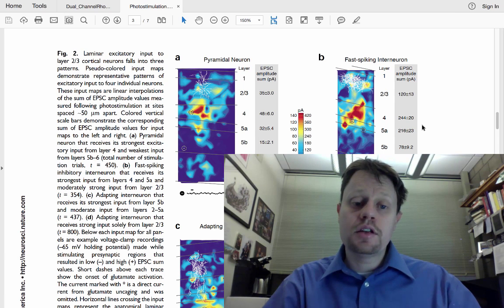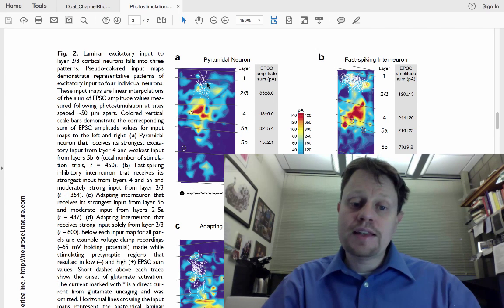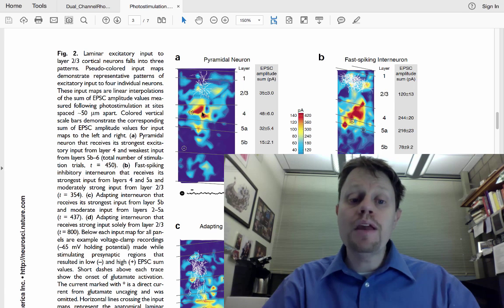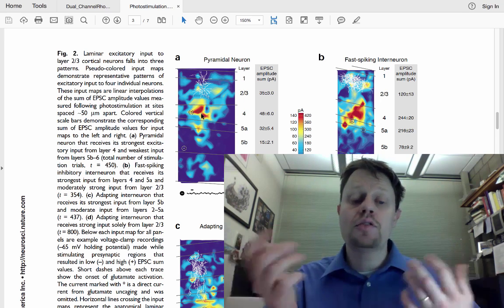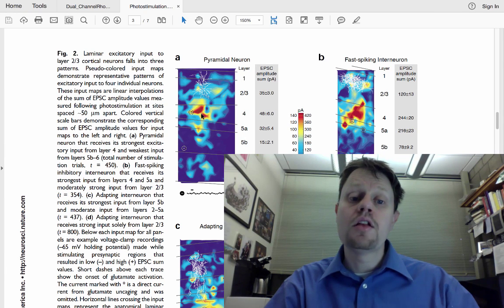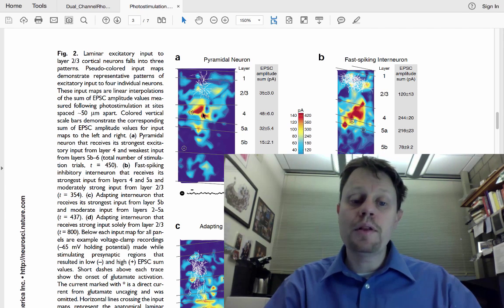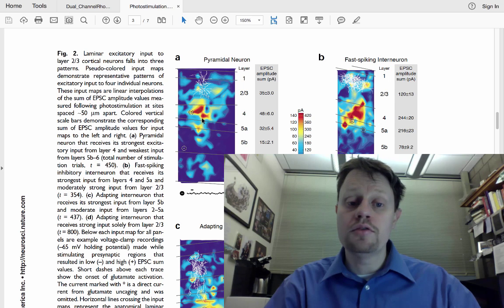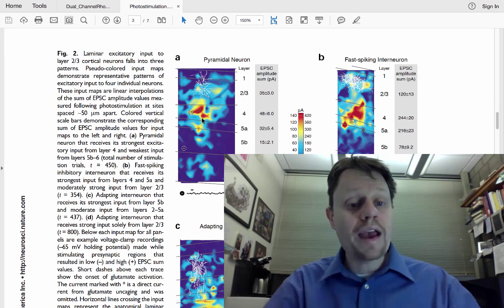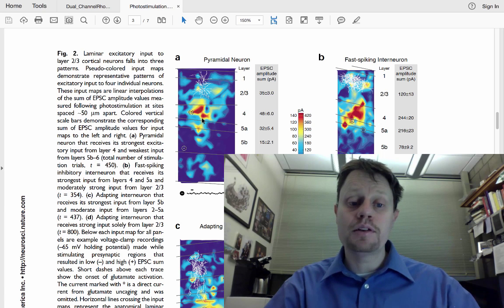But you might be curious to know, not just, for example, for this cell in layer 2-3 here, where are the cell bodies of the input neurons, but maybe you want to know where are the different excitatory or inhibitory neurons that project onto it located in terms of the location on the dendritic tree that they make synapses. So, for example, here we've discovered already in the last paper that there are a lot of excitatory neurons in layer 4 that make synaptic contacts onto our layer 2-3 neuron. But we don't know where on the elaborate dendritic branching pattern of this layer 2-3 neuron those inputs come.